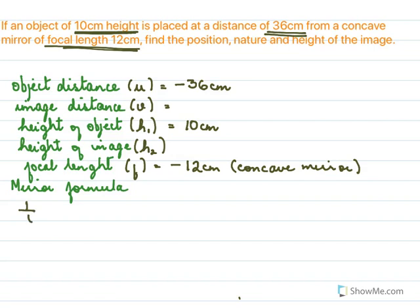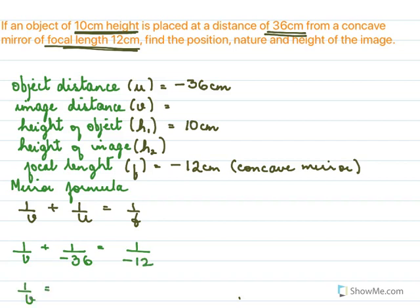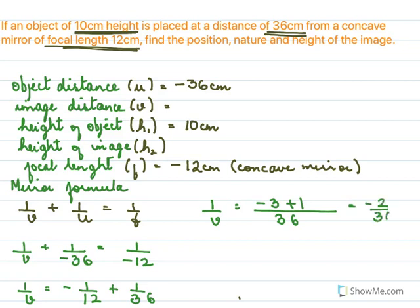Mirror formula: 1/v + 1/u = 1/f. Substituting: 1/v + 1/(−36) = 1/(−12), so 1/v = −1/12 + 1/36. LCM is 36: (−3 + 1)/36 = −2/36 = −1/18. Therefore v = −18 centimeters.